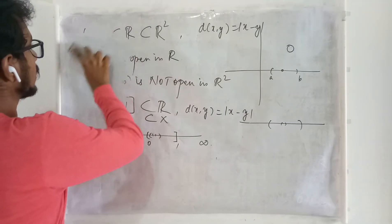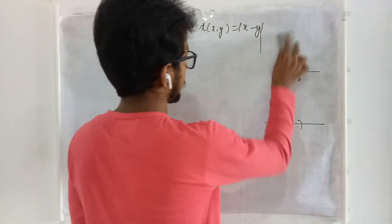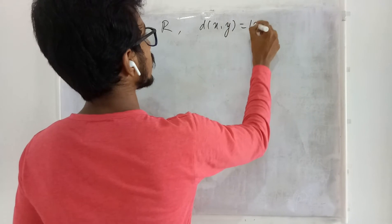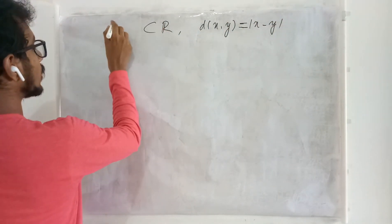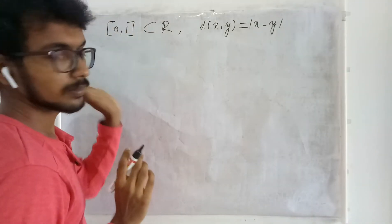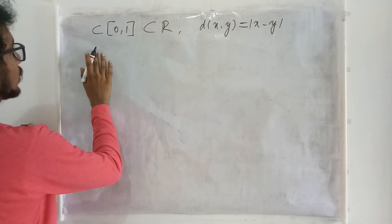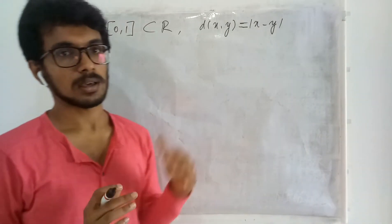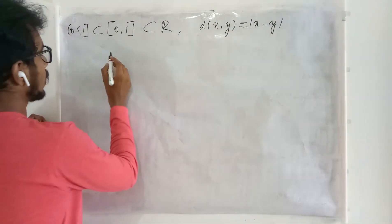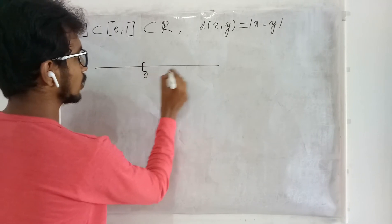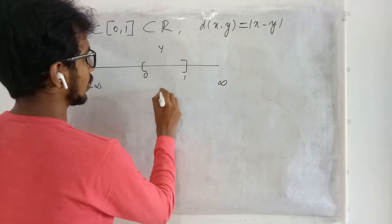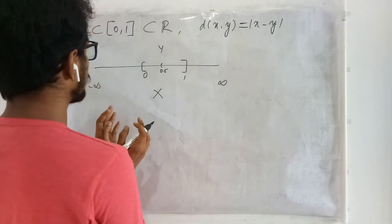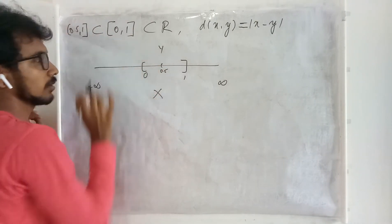Let us see one more example on the real line, where the metric is absolute of x minus y. Let me consider X to be R and Y to be the interval from 0 to 1. Inside Y I am choosing E to be the interval from 0.5 to 1. Now I am going to say this E is open in Y, that is in the interval 0 to 1.